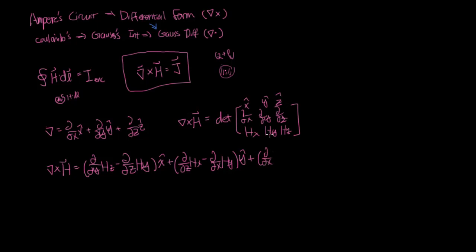plus d by dx. So now you look at this z vector, and you evaluate this 2 by 2, you get d by dx, hy minus d by dy, hx. And that gives you the value in the z direction.